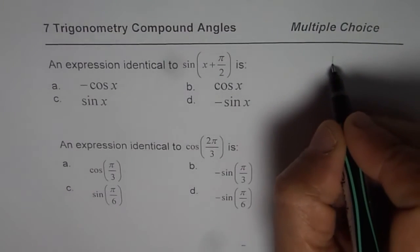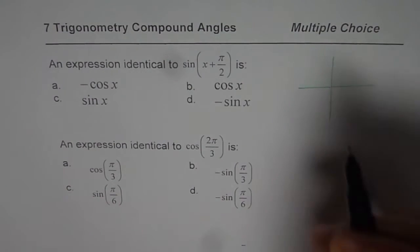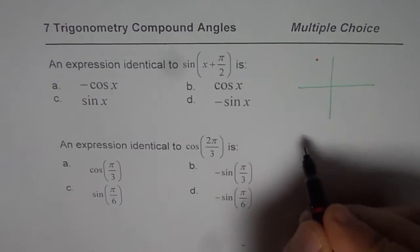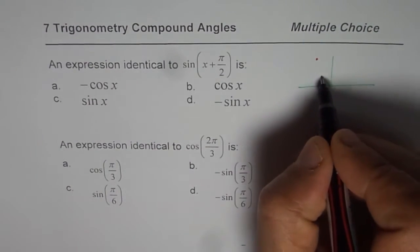So when we are saying x + π/2, it really means that we are in quadrant 2. In quadrant 2, sine is positive.